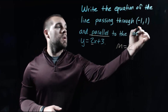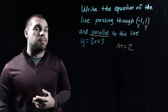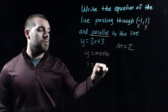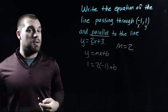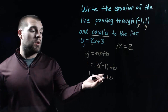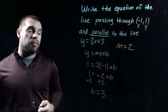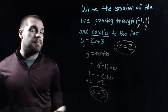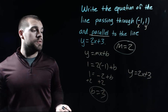We're going to use y equals mx plus b with our slope of 2 and our point negative 1, 1 to find the b value. The point gives us an x value and a y value to substitute in. The y value is 1, the slope is 2, the x value is negative 1, and we're solving for b. 2 times negative 1 is negative 2, so adding 2 to both sides gives us b equals 3. The equation is y equals 2x plus 3.